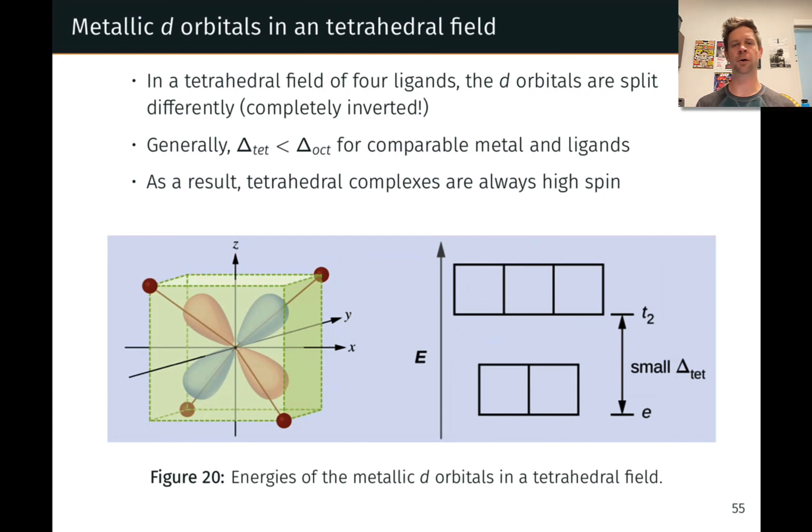Before we get there though, I wanted to touch on the tetrahedral and square planar geometries. Our discussion of crystal field theory to this point has focused on the octahedral geometry, but tetrahedral and square planar geometries are quite common and give rise to different splitting patterns of the d-orbitals and differences in the nature of high spin and low spin complexes, as we'll see.